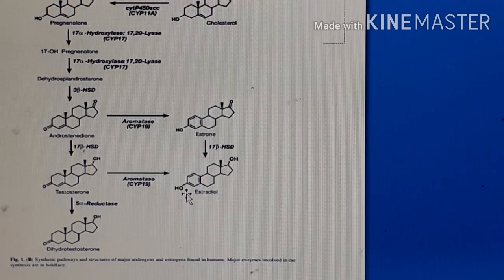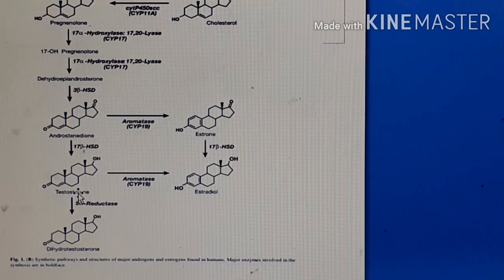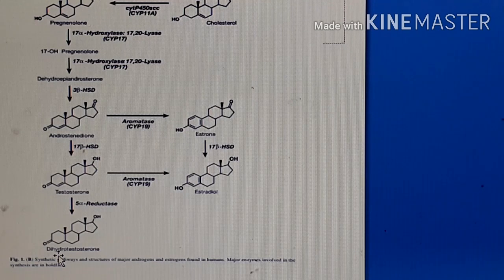Estrone is a slightly unstable molecule that readily converts into estradiol. 'Diol' indicates two hydroxyl groups. Estradiol is considered a more active biological molecule; the conversion from estrone to estradiol involves a reduction reaction, and these compounds are involved in various metabolic reactions inside the body.